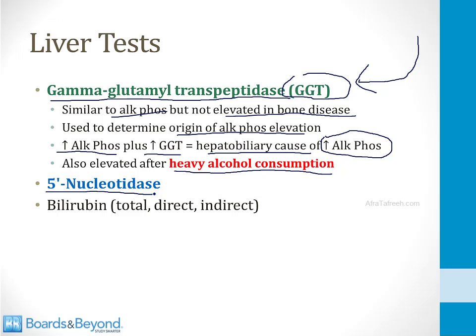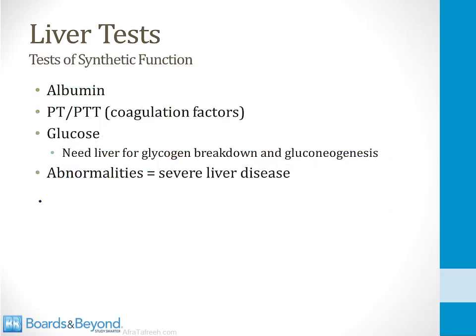The final liver test we won't talk much about in this module is measurement of the bilirubin level. In the bilirubin module, I talk about how you can measure total, direct, and indirect bilirubin levels and use these to determine what's going on inside the liver and the biliary tree. All those blood tests I just mentioned are often referred to as liver function tests, but they are actually liver dysfunction tests, meaning that they rise when the liver is dysfunctional.